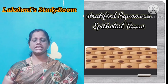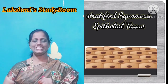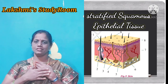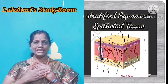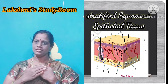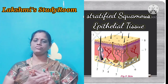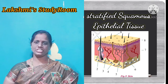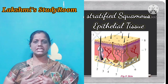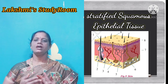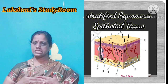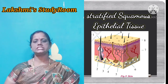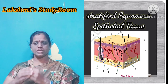The next one is stratified squamous epithelial tissue. Our skin has so many layers — the epithelial cells are arranged in many layers in the skin. This type of layered arrangement is called stratified squamous epithelial tissue. Our skin has an outer epidermis, middle dermis and inner dermis. These layers are arranged one upon the other, which is why it is called stratified squamous epithelial tissue.